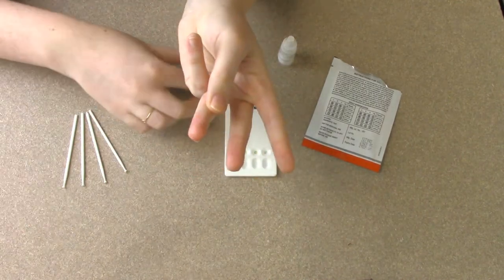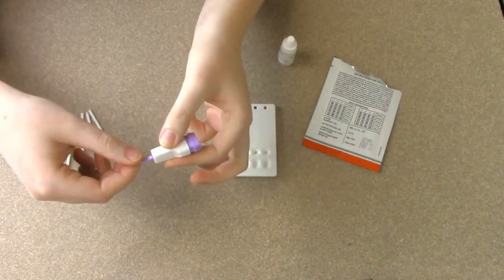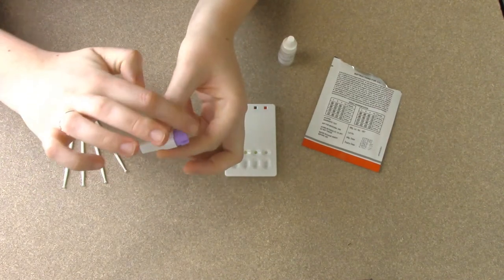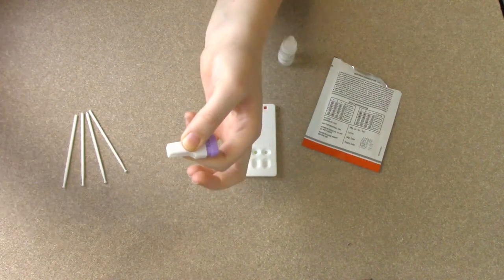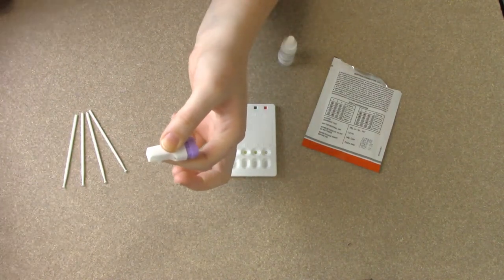The next step is just to remove the protective cap on the thin end of the lancet. So it's not this end here, it's this little thin end, and you actually twist and pull and the lancet is now ready to use.